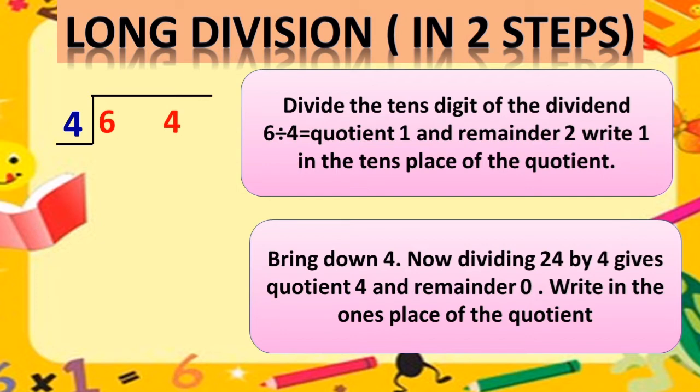4 twos is 8. Beta, yaad rakhna hai ki jab bhi aap division ke sums karein to aap smaller number le sakte hain, lekin aap biggest number nahi lenge. Agar hum 8 ko dekhein to 8, 6 se bada number hai. To hum kya karenge? Chhota number lenge. Aur 8 se chhota number 4 hai. 4 ones is 4. Yes.